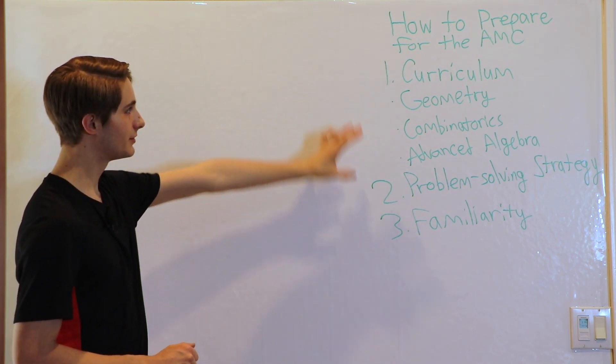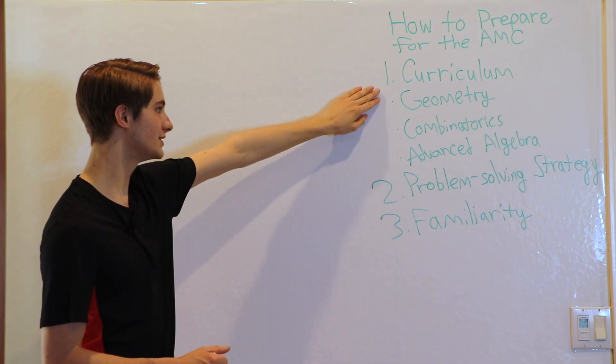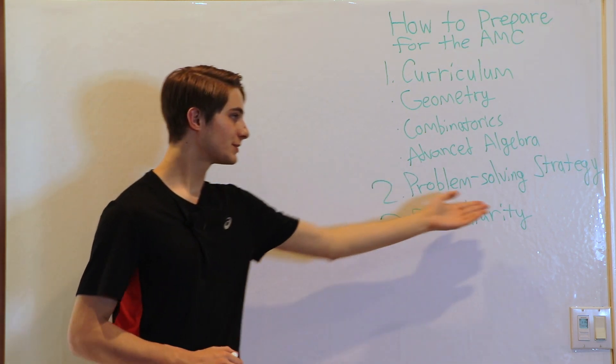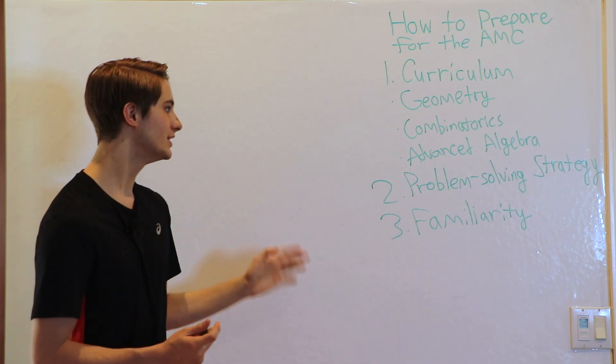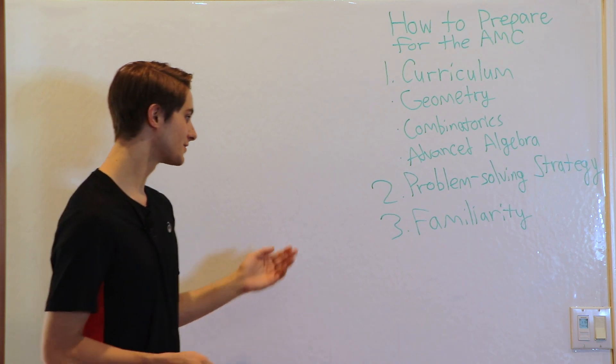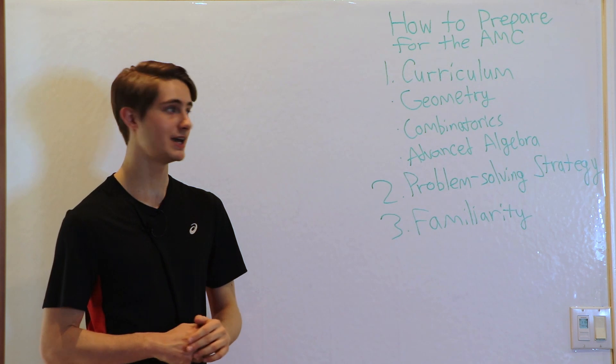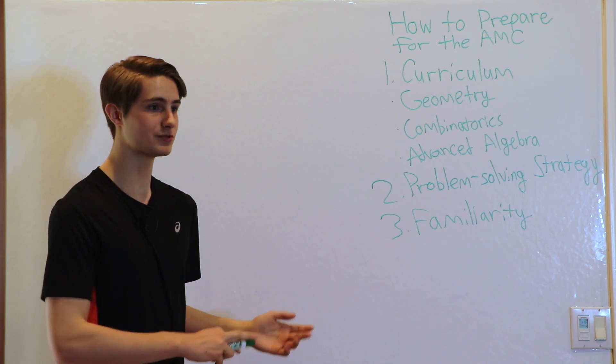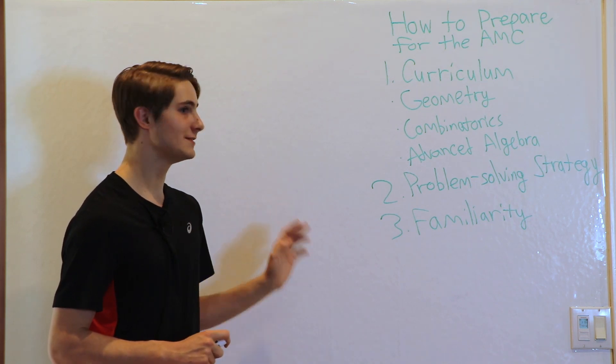So these are the three things that I would recommend you do to prepare for the AMC. First develop a base of curriculum in things like geometry, combinatorics, and advanced algebra that show up a lot on the AMC. Second develop the problem solving strategy of playing around with problems by doing some advanced problems on the AMC and checking out the Art of Problem Solving YouTube channel to see how he solves some of the more advanced problems. And the last one is familiarity which means doing as many problems as you can so that when you get into the test room you're able to recognize a lot of the problems as something you've seen before so you're able to get to that solution. I hope this helps you the next time you take the AMC and good luck.